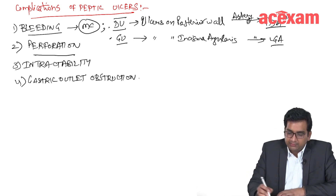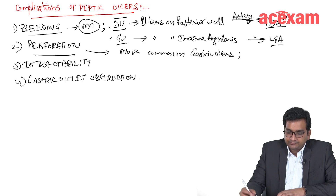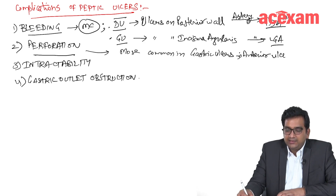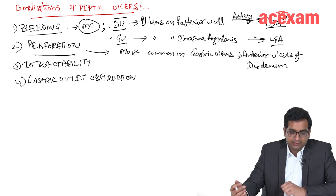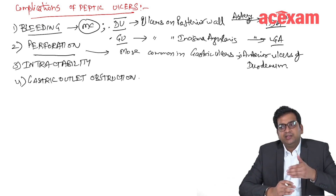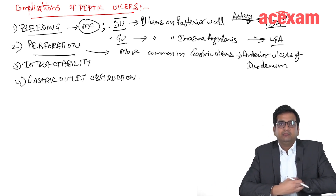Coming on to perforation — perforation is more common in gastric ulcers, followed by anterior wall ulcers of the duodenum. So overall, perforation is more common in gastric ulcers. If a duodenal ulcer is perforating, it is more common in anterior ulcers. We generally remember that in the duodenum, anterior ulcers tend to perforate more, and posterior ulcers have a tendency to bleed more.